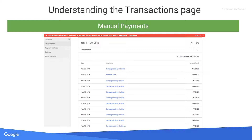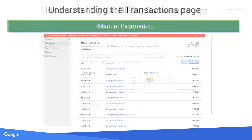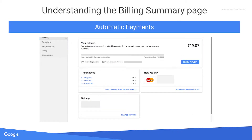If you're using automatic payments, your billing summary will have a progress bar that shows how close you are to reaching the payment threshold before you are charged. You will also see cards for your recent transactions, your payment methods, and your settings.